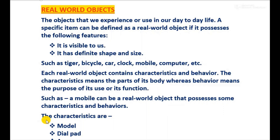Examples of non-living real world objects include bicycle, car, clock, mobile, computer, aeroplane, train, and so on. Examples of living real world objects include human beings, students, tiger, and cat. These are all examples of living real world objects.